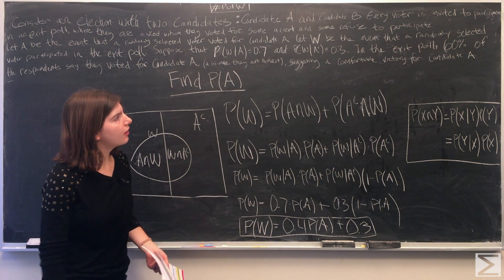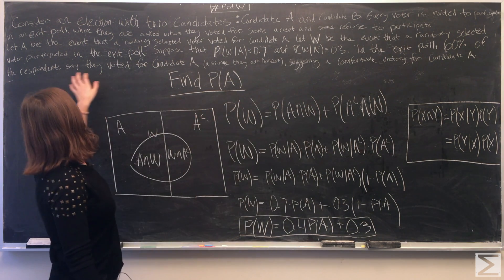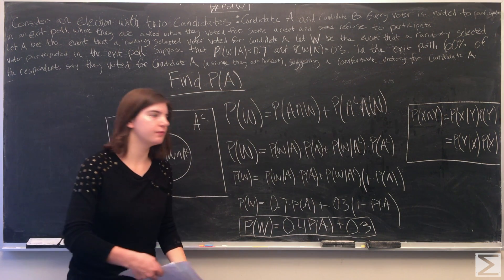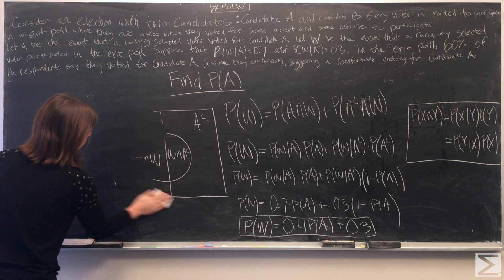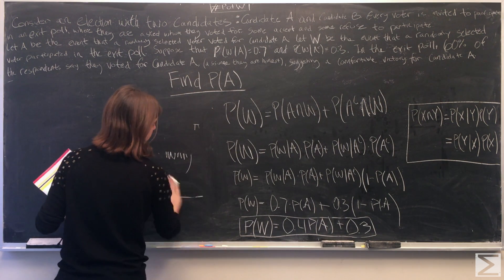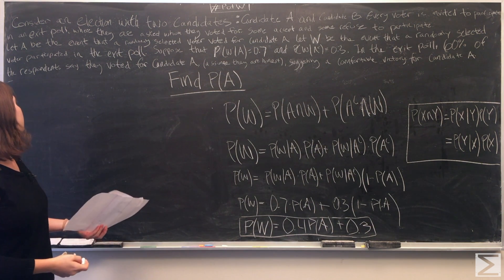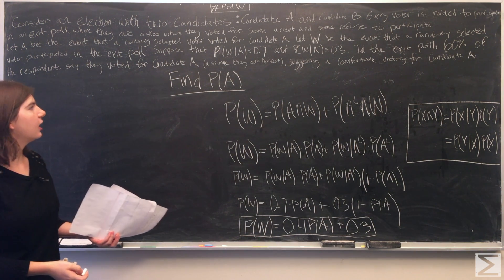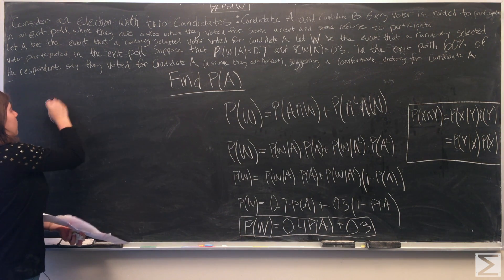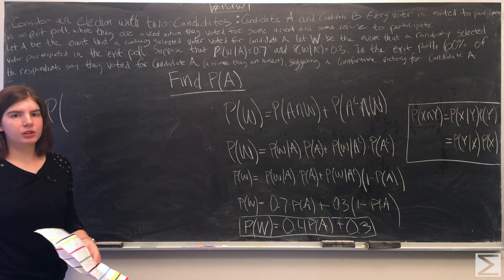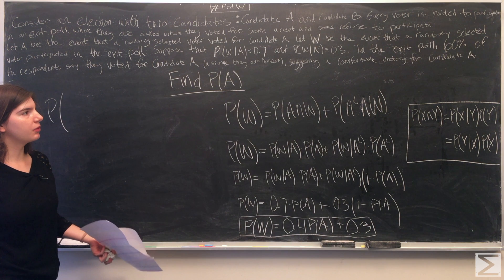Our next step is we have to figure out what the 60% information tells us. So we're told that 60% of respondents say they voted for candidate A in the exit poll. So that says that if they voted in the exit poll, given that they voted in the exit poll, then 60% voted for A.